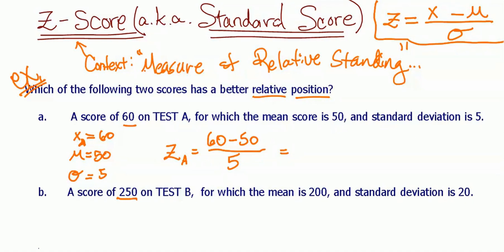While you do that calculation, I'm going to get the test B information. So for test B, we should have a score for B, we should have a mean, and a standard deviation. So 250 was our score, the mean for the class was 200, and standard deviation, or the spread, was 20.